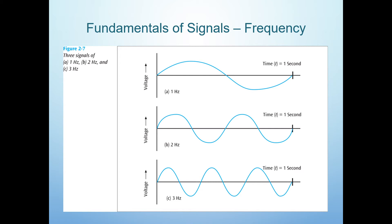The middle signal completes two cycles in one second, so its frequency is two Hertz. The lower signal completes three cycles in one second, so this signal's frequency is three Hertz.